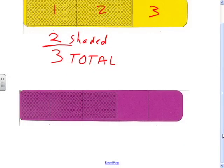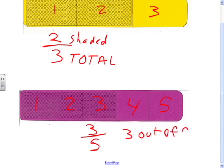So looking at the next example, there are five total pieces. Three of them are shaded. So the fraction is three shaded out of five total. Three-fifths is the fraction, but what it means is three out of five.